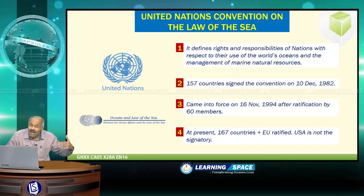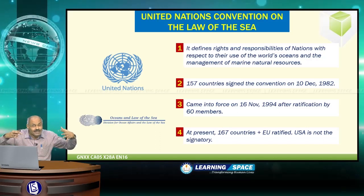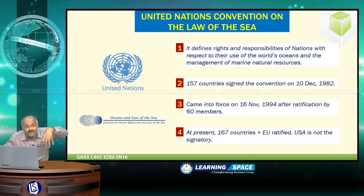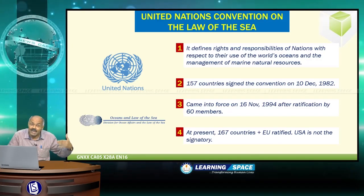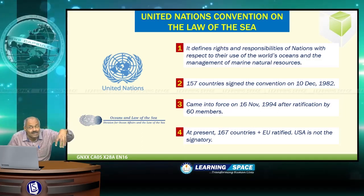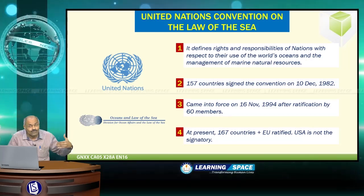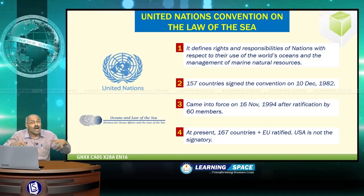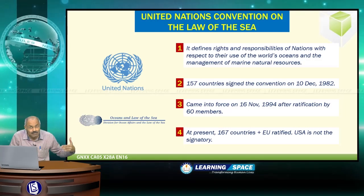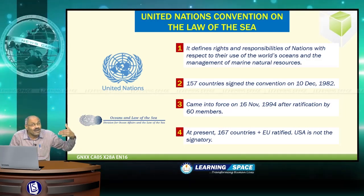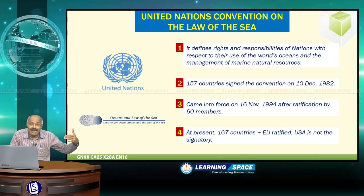UNCLOS is the convention which defines the rights and responsibilities of nations with respect to their use of the world's oceans and the management of marine natural resources. This convention was signed by 157 countries on 10 December 1982, and came into force in 1994 after ratification by 60 members. At present, 167 members and the European Union have ratified this convention. Importantly, both China and the Philippines ratified it.